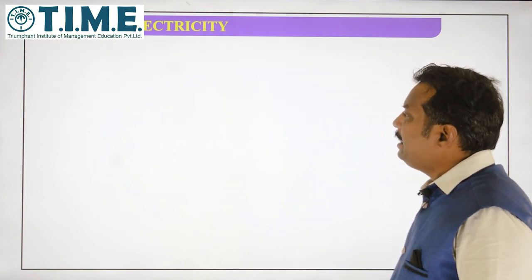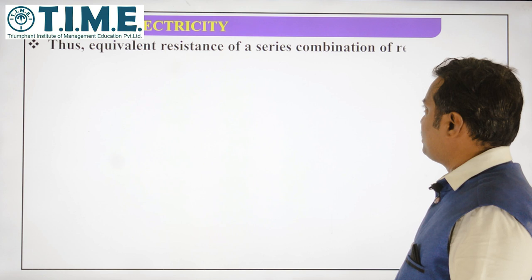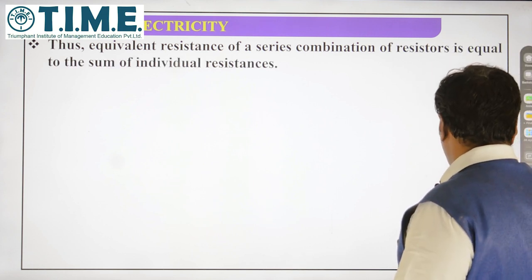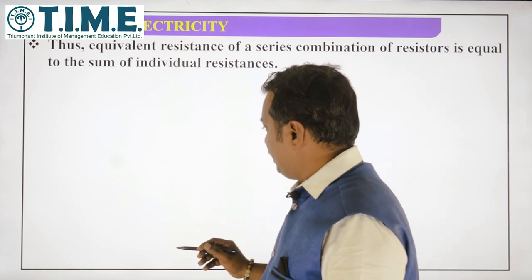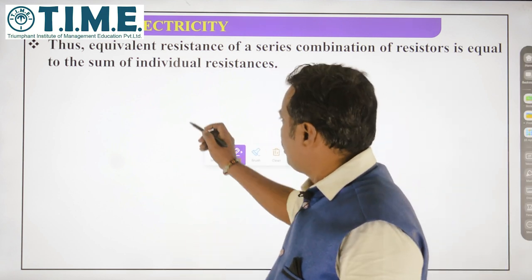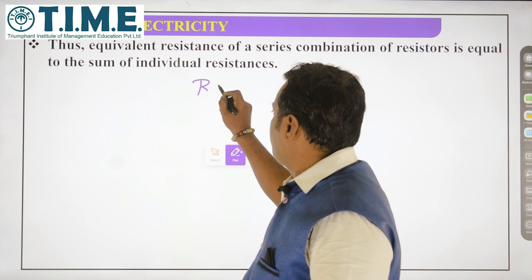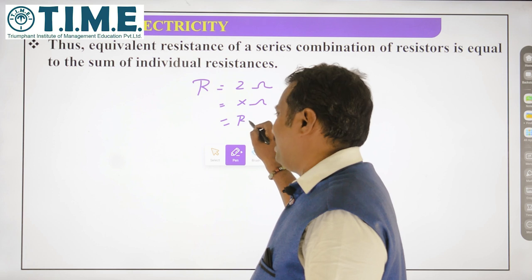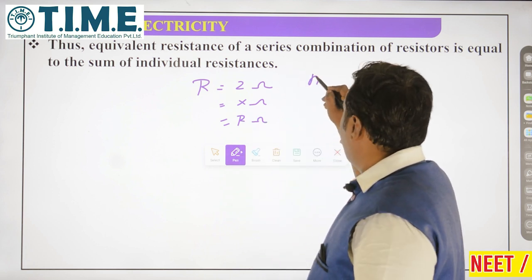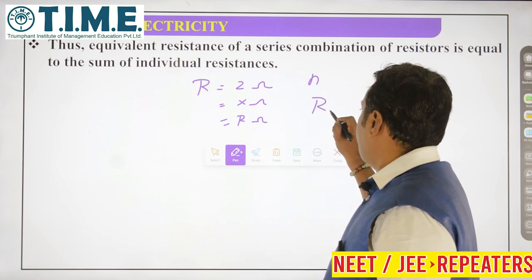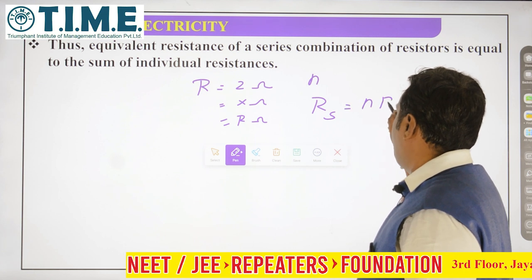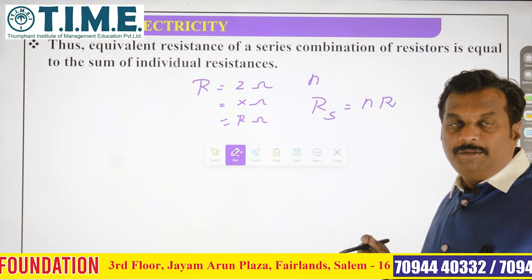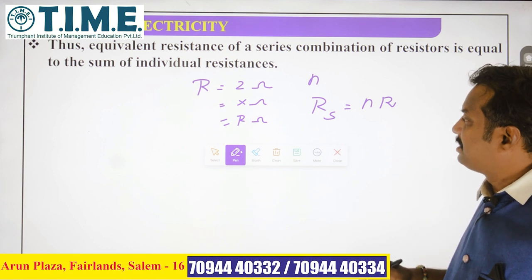So this is the effective resistance in case of series combination. Now if there are n identical resistors, each with resistance R, let us assume n resistors each of value R ohms. Then the effective resistance in series combination RS = n × R. For example, if there are 100 such resistors each of 5 ohms, the effective resistance will be 100 × 5 = 500 ohm.